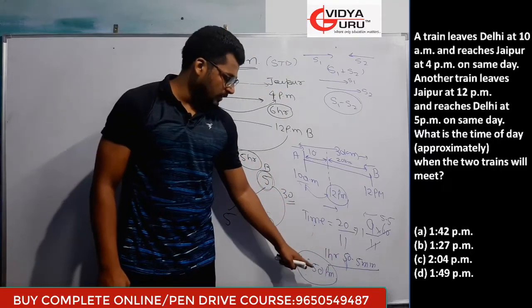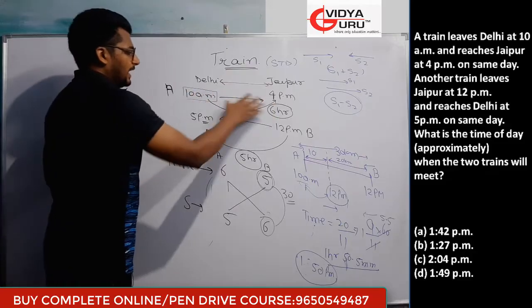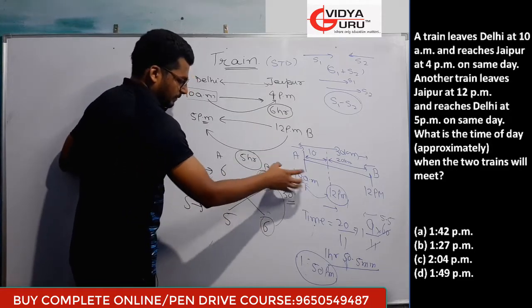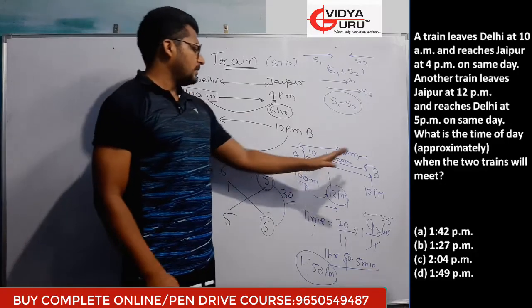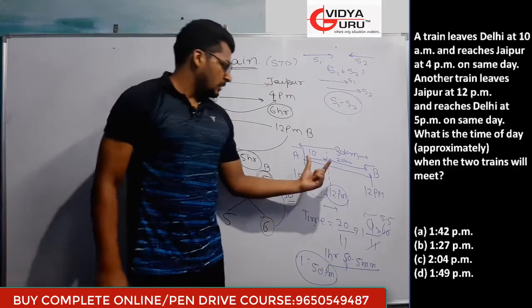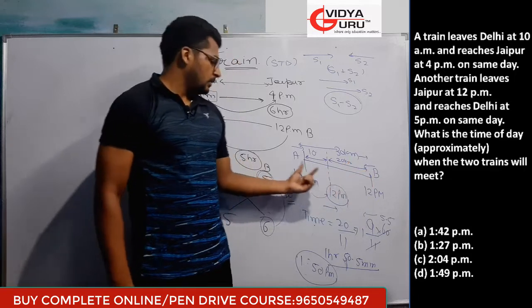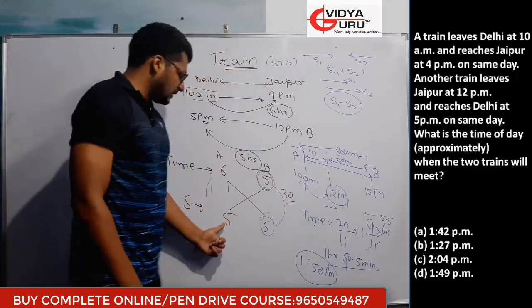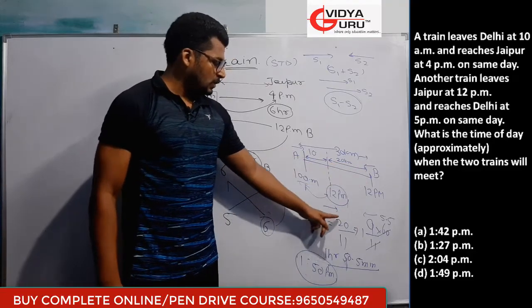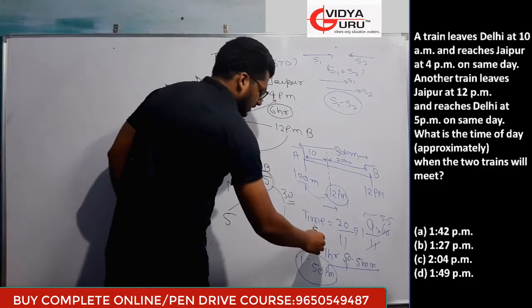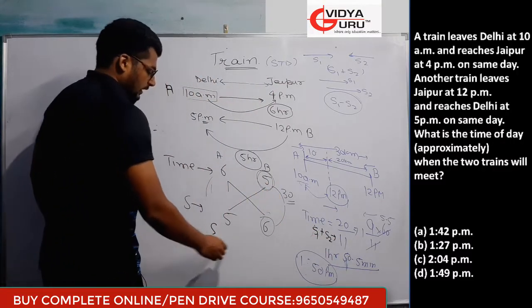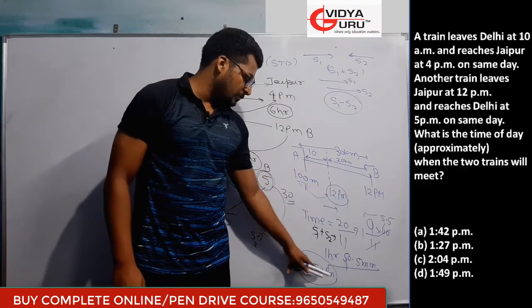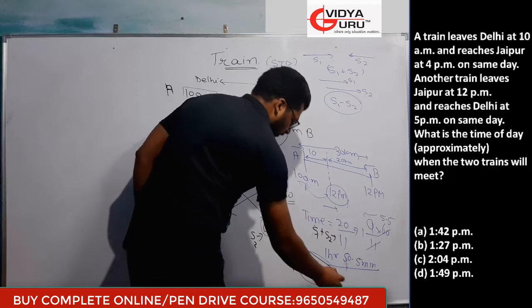To summarize: I first found the time each train takes to cover the same distance; since distance is constant, the reverse of time gives the speed ratio. I assumed distance = 30. To find the meeting time, I brought train A to 12 PM — it covered 10 units in 2 hours — leaving 20 units. With opposite-direction speeds adding to 11, meeting time ≈ 1 hour 50 minutes after 12 PM, i.e., 1:50 PM.